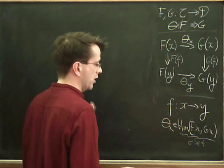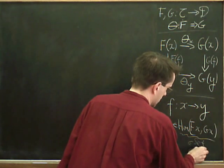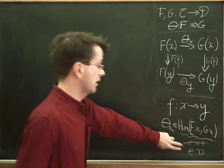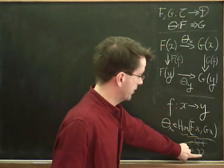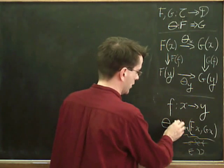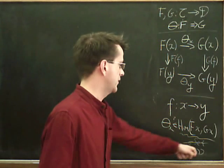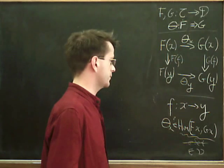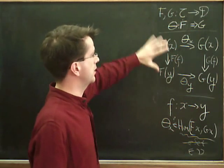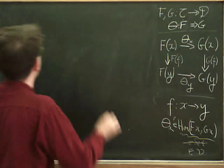And a set has elements. Whereas in the enriched setting, this is actually going to be an object in our enriching category V. And typically, objects in categories, just pick a random category, an object in it is not going to have elements. So what does it mean to say theta X is an element in this whole object? So there's a way around that. A slightly naive way around it, but it will be useful. But we're going to see a better way of doing things later.